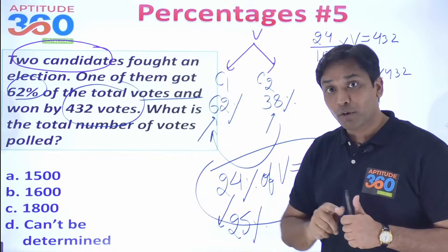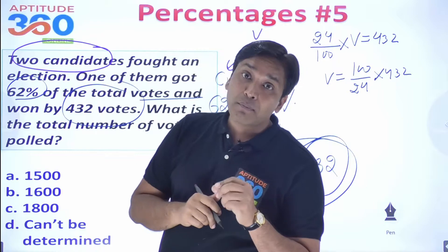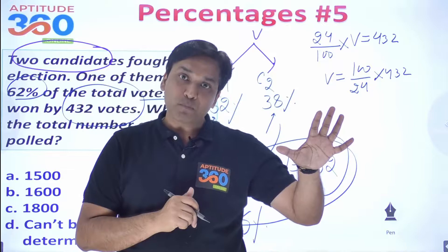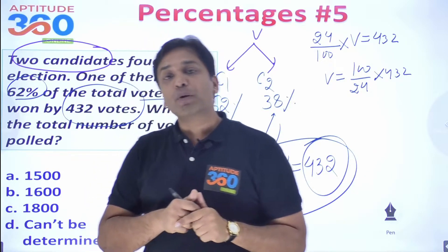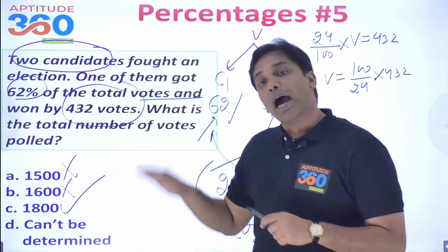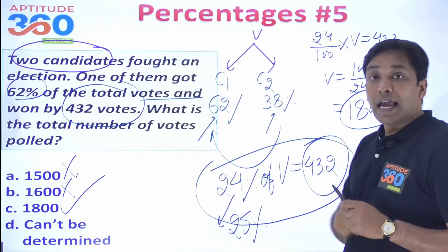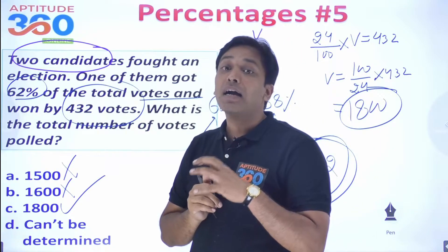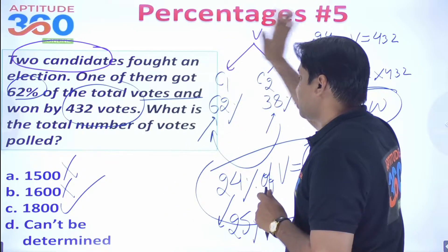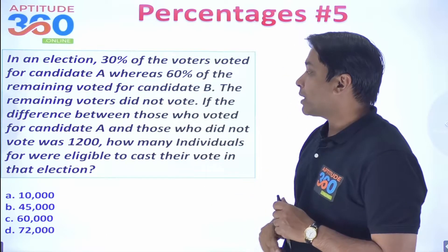If one-fourth of the total votes is 432, then the total is 432 × 4, which is more than 1600. So we can eliminate options below 1700. The answer comes out as 1800. You can identify this quickly without fully solving the calculation.